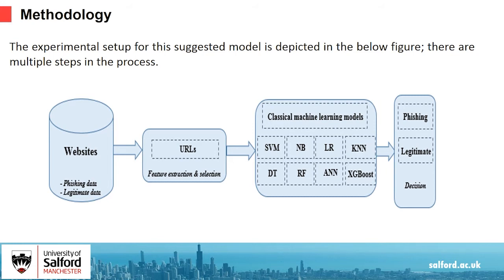There are multiple steps in the process. First, the dataset of phishing websites is selected. Then a feature selection algorithm is used to analyze the top attributes. The features are fed into the ML classifiers after being normalized. The training of the features will be done using classical machine learning models such as XGBoost, SVM, RF, KNN, ANN, LR, DT, and NB. Detection of phishing websites will be achieved by using the best performing algorithms.